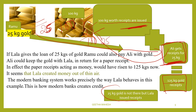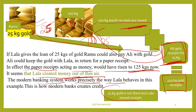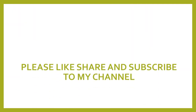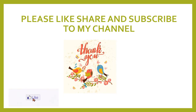In this manner, commercial banks also create loans. The effect of paper receipts acting as money has risen to 125 kgs — it seems that Lala created money out of thin air. The modern banking system works precisely the way Lala behaves in this example. This is how modern banks create credit. Dear students, if you like this video, please like, share, and subscribe to my channel. Thank you so much.